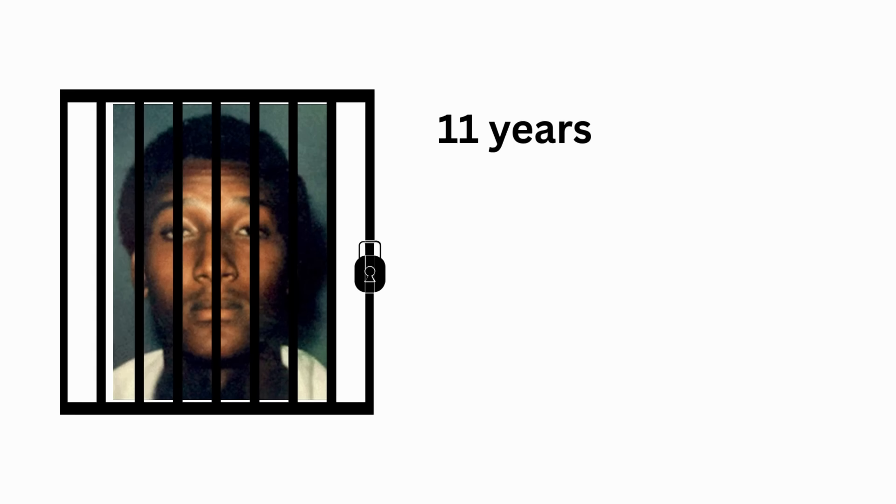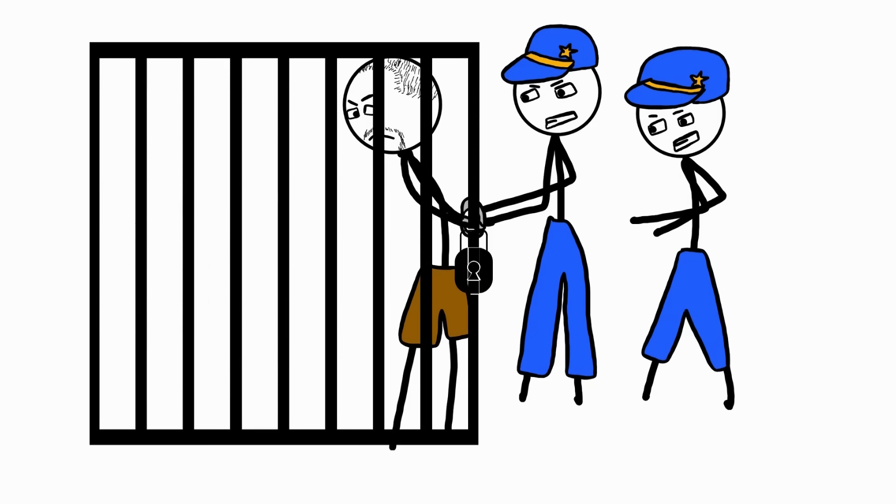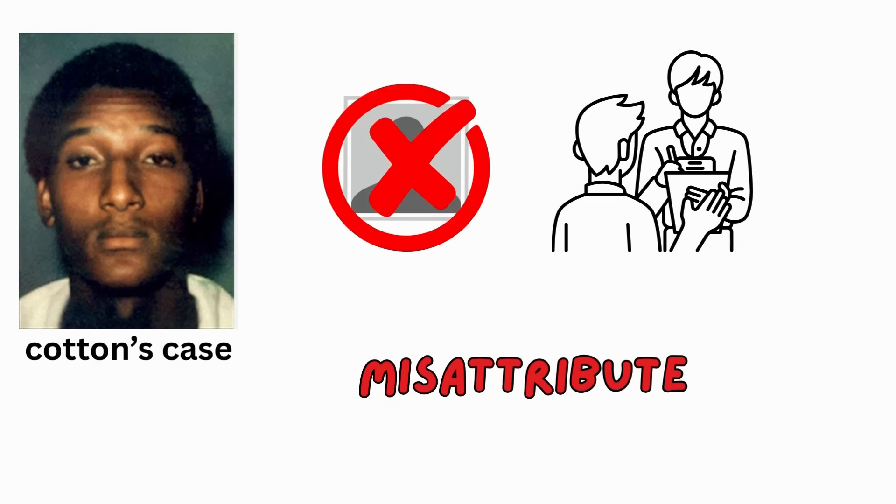After serving 11 years of his sentence, DNA determined that he was, in fact, innocent. The real perpetrator was caught and sentenced. Cotton's case is one of many where eyewitnesses misattribute a crime to the wrong person.